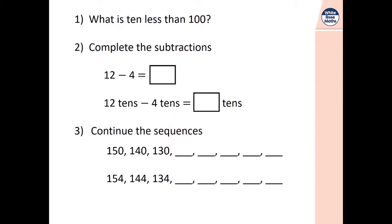Question 1. 10 less than 100 is 90. Question 2. 12 subtract 4 is equal to 8, and 12 10s subtract 4 10s is equal to 8 10s too. Question 3. Continue the sequences. We're counting back in 10s. 150, 140, 130, 120, 110, 100, 90, 80. In the next sequence, we're counting back in 10s again, but this time starting at 154. So, 154, 144, 134, 124, 114, 104, 94, 84. Did you notice the links with the first sequence?